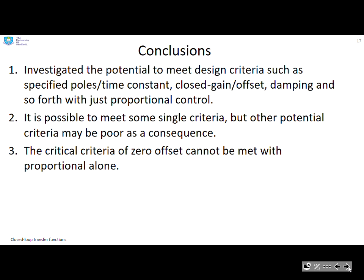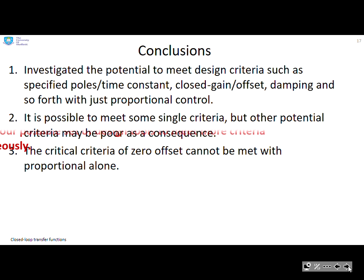So we've investigated the potential to meet design criteria such as poles, time constant, gain, offset, damping, and so forth, with just proportional control. It's possible to meet some single criteria, but it's likely that other potential criteria will be poor as a consequence. The critical criteria of zero offset cannot be met with proportional alone. The following resources are going to look at how we can tackle offset and thus augment our possible set of design tools to meet more criteria simultaneously. I'll see you again soon.